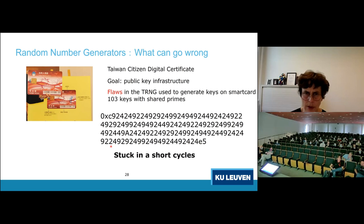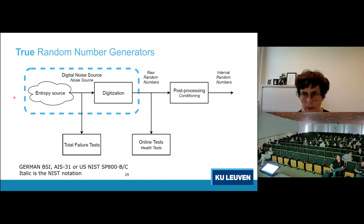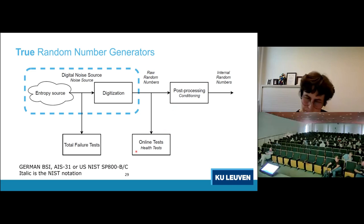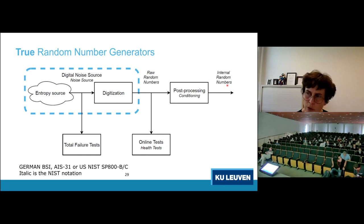This slide shows the standard model from German BSI and US NIST standards. You have a digital noise source generating entropy, with total failure tests — simple checks for outputs stuck at zero or one. Then you have an online test or health test module that monitors random number quality on the fly as numbers are produced. Finally, a post-processing or conditioning step produces high-entropy, high-quality random numbers.